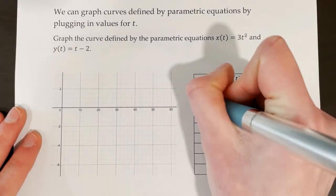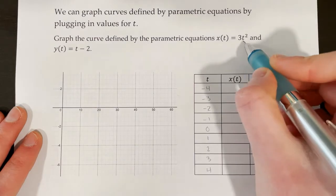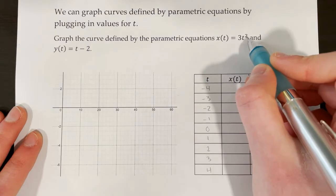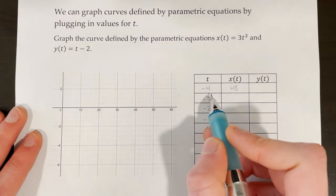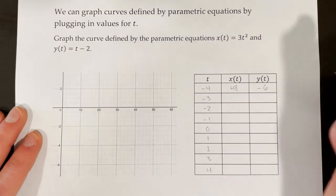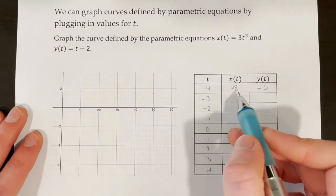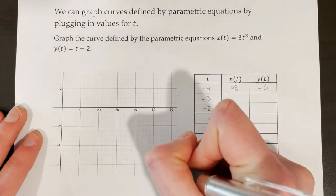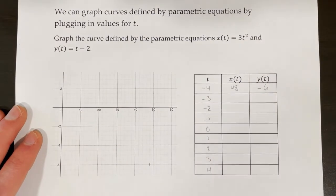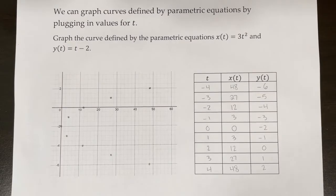I'll start with t values of −4, −3, −2, −1, 0, 1, 2, 3, and 4. For t = −4, x(−4) = 3(−4)² = 3 × 16 = 48, and y(−4) = −4 − 2 = −6. The parameter t doesn't have its own axis — we only have an x-axis and a y-axis. So the point we plot is (48, −6). We repeat this process for all other t values and then connect all the dots to get a smooth curve.